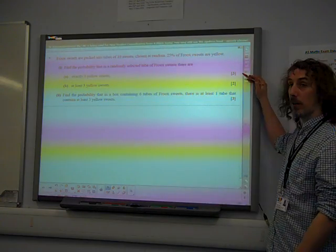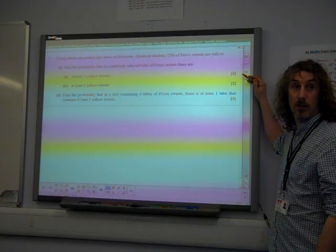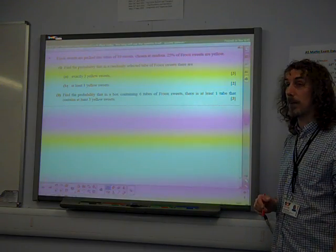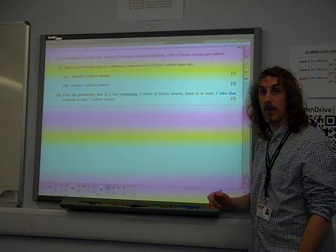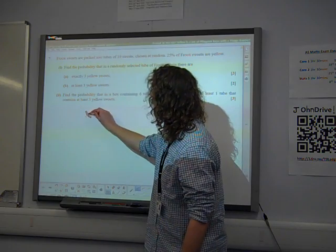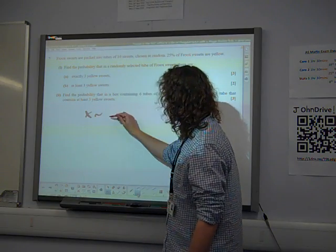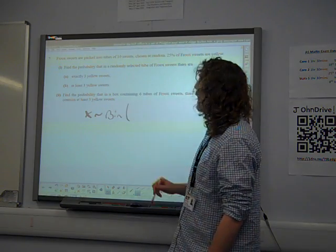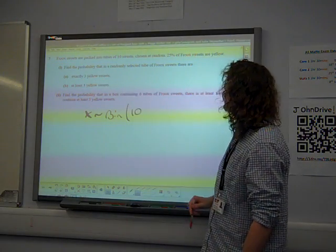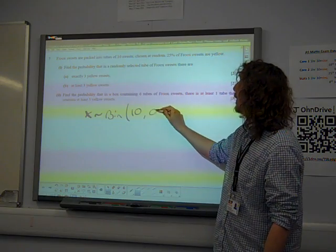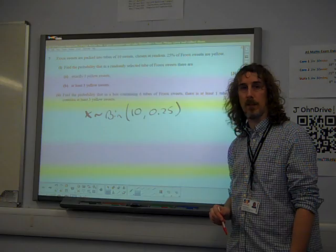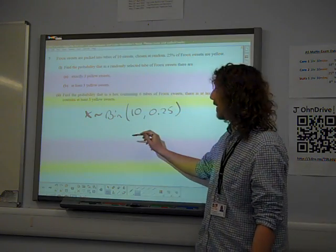So this starts with three marks. The first of which is for you correctly identifying that we're dealing with a binomial distribution question. So the first thing we're going to do is we're going to say x. You need to make it clear that you've decided it's binomial. x follows the binomial distribution. There are ten sweets in a packet. The probability of a sweet being yellow is 0.25. And x is the number of yellow sweets.